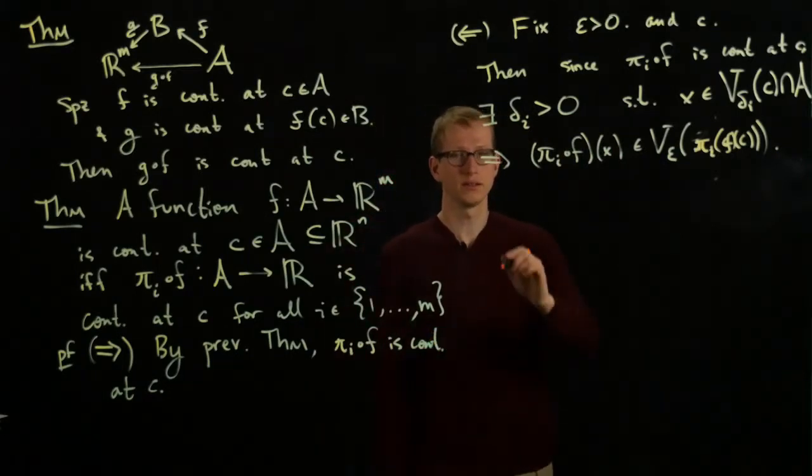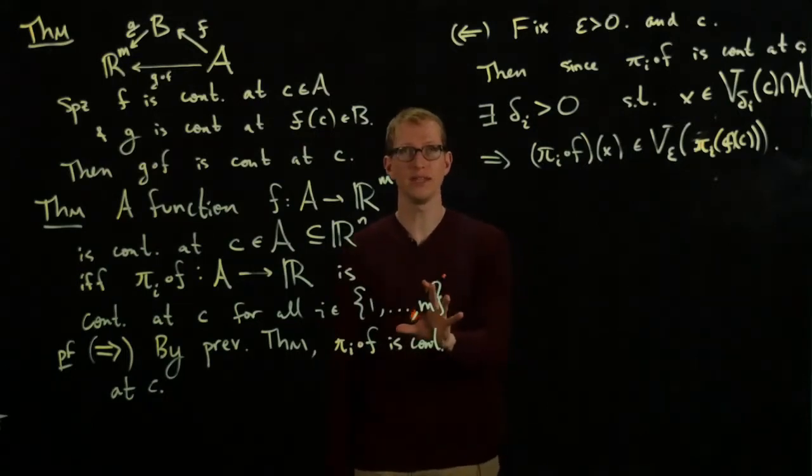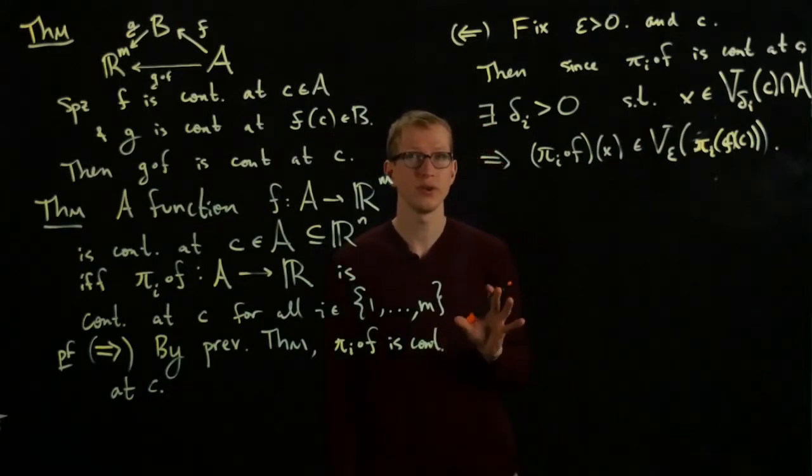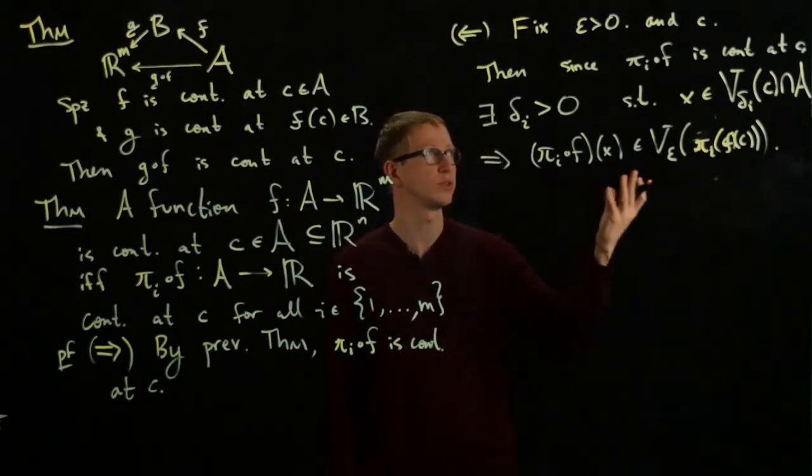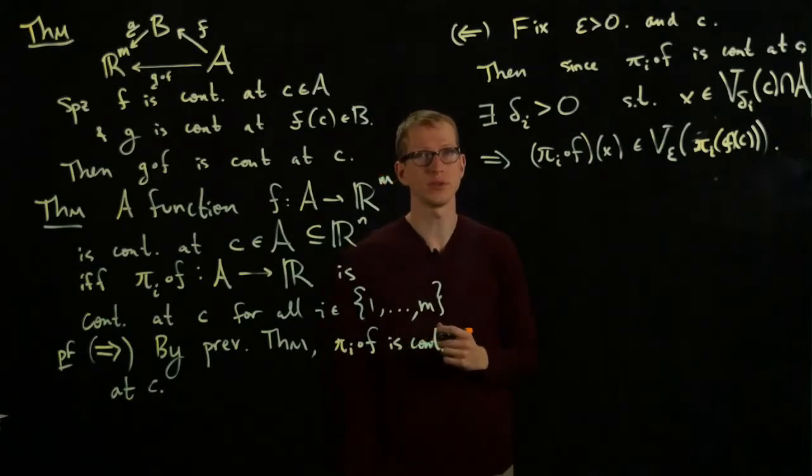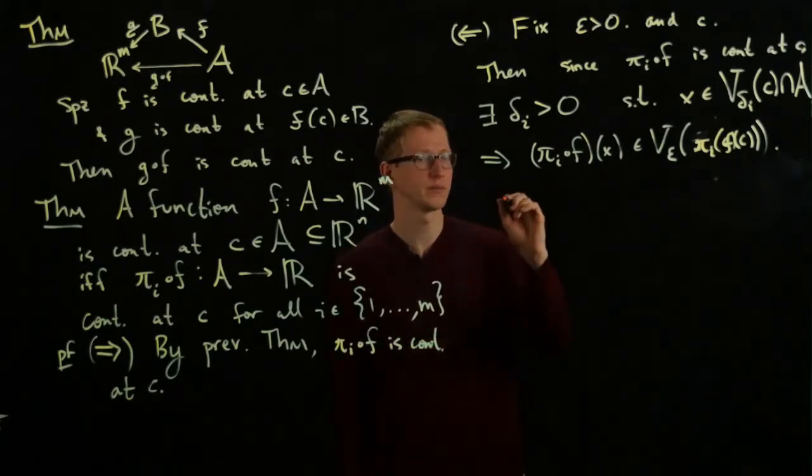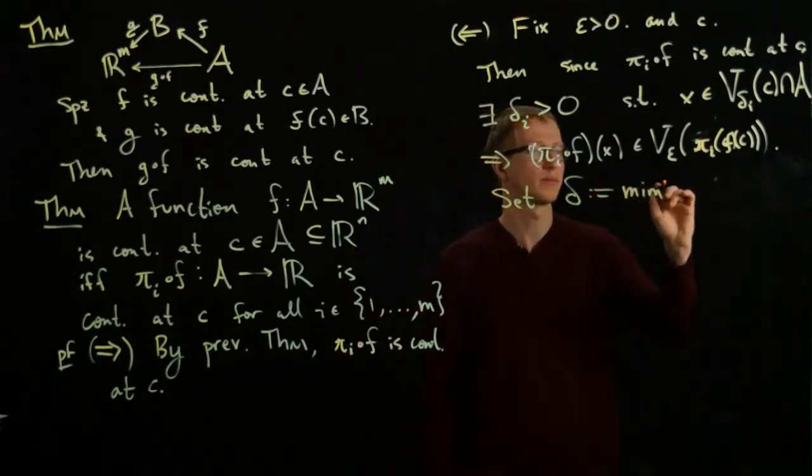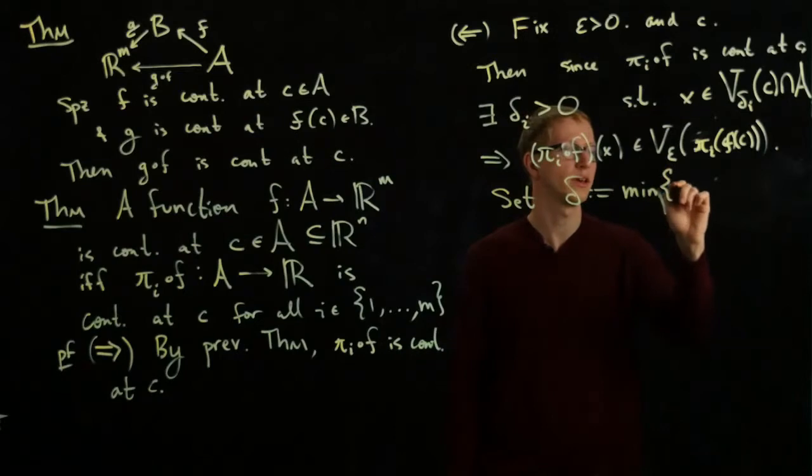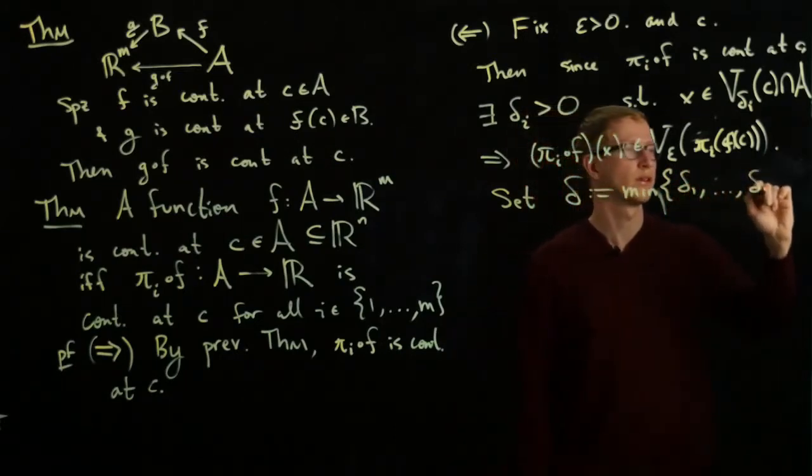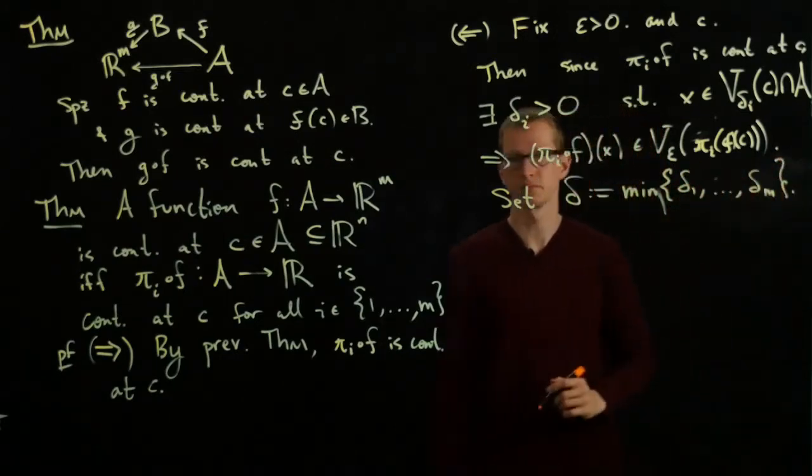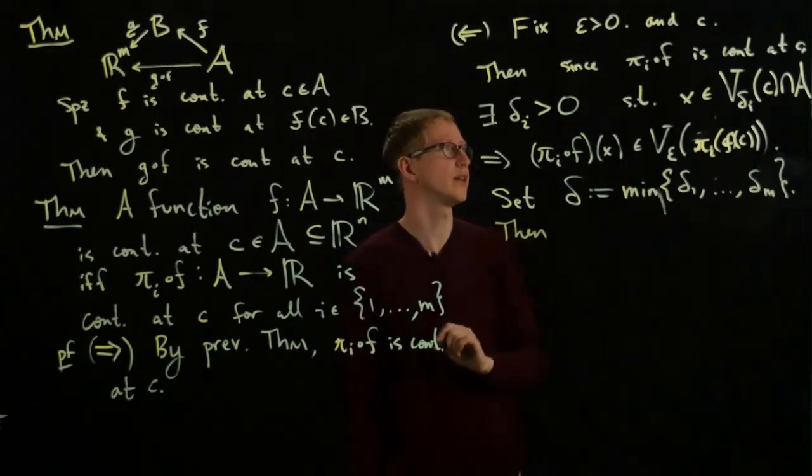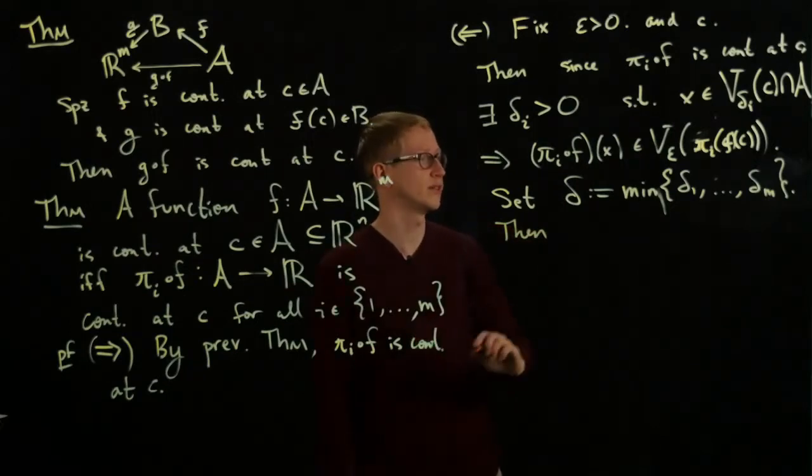So then, so we have M of these delta_I's. That's a finite number of delta_I's. Usually when you have a finite number of such deltas that you've been able to construct from some other assumptions, it's convenient to take the smallest one. So let's set delta equal to the minimum of all of these deltas. Then you can check that this actually works. Then, and I'll leave that little step for you as an exercise.